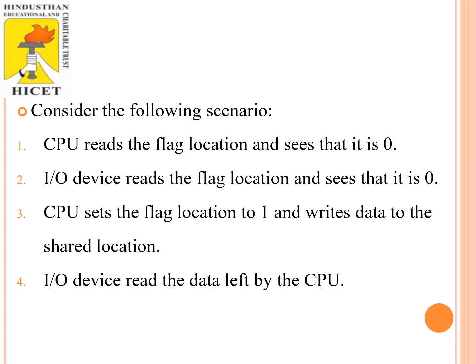Let's consider a scenario. First, the CPU reads the flag location and sees that it is 0. Then the input-output device reads the flag location and also sees that it is 0. Then the CPU sets the flag location to 1 and writes the data to the shared location. Finally, the input-output device reads the data left by the CPU. This is how the shared memory location functions.